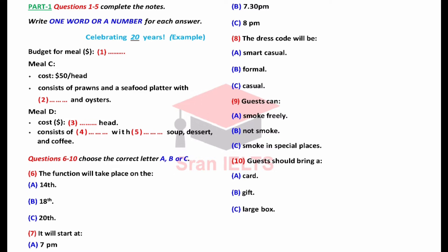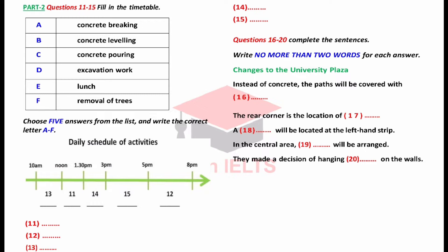That is the end of section one. You now have half a minute to check your answers. Now turn to section two. Section two. You will hear a construction worker and university officer discussing the effects of some new construction on the university premises. First, you have some time to look at questions 11 to 15. Now listen carefully and answer questions 11 to 15. Hello. Helen, is it? Yes, that's right. And let me begin by saying that your construction is already causing considerable disturbance to our student body.